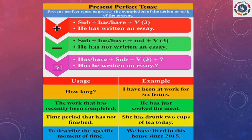For the negative form: subject plus has or have plus not plus past participle form of the verb — 'He has not written an essay.' For the question form: has or have plus subject plus past participle form of the verb — 'Has he written an essay?'